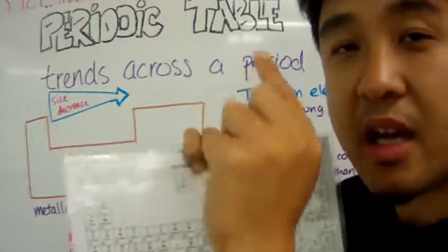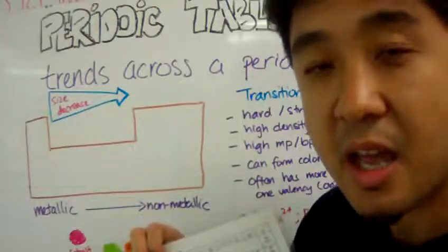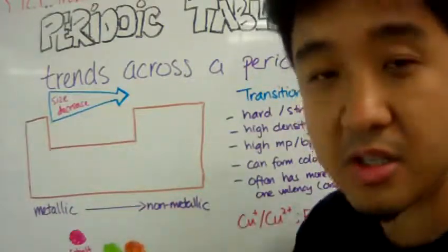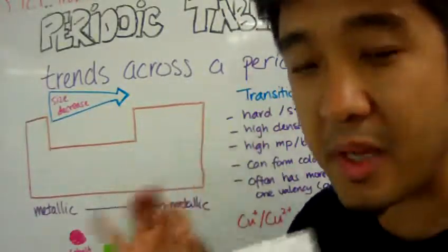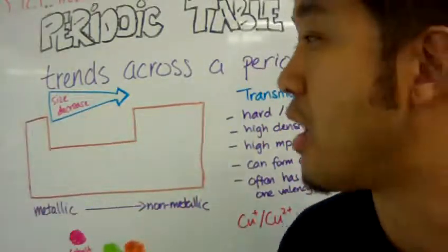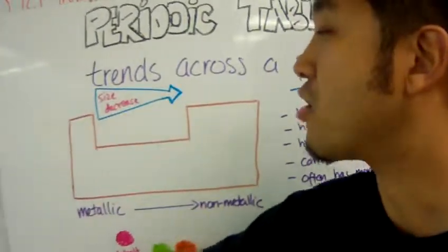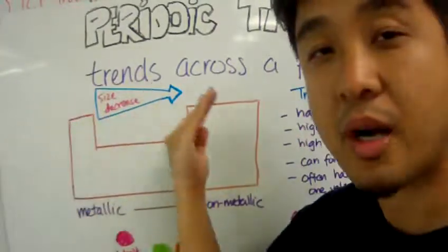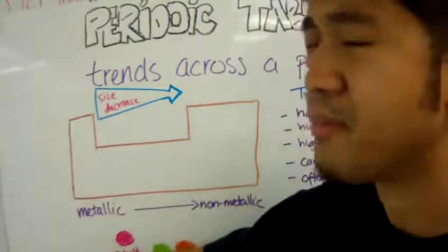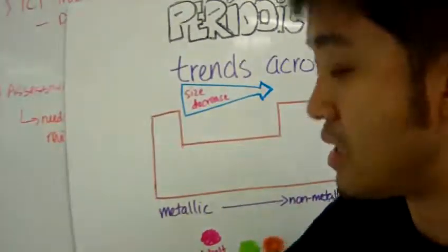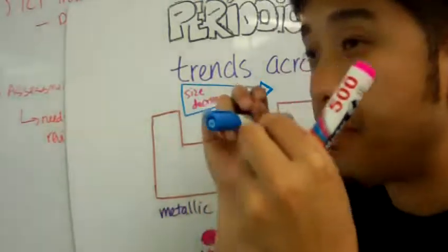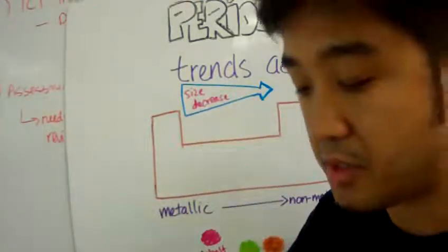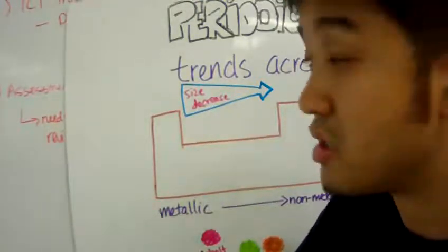The first thing we want to talk about in general trends as we go from left to right in a single period is the atomic size, not the ionic size. Don't get those two things confused. We're only concerned about the atomic size. Now the atomic size across a period as you go from left to right would decrease, and the reason being is it all boils down to the number of electrons in the valence shell.